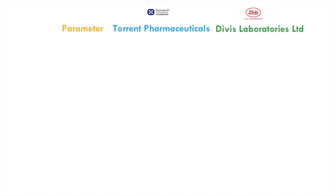The first parameter is PE. Torrent Pharma's PE is 36, whereas Divi's Laboratories' PE is 32. I've given two stars to Divi's for having the lower PE. In my previous videos I would have given two stars to the higher PE, but we have to include other parameters also before choosing a company. Not all companies with a higher PE are bad, and not all companies with a lower PE are good — we have to check all parameters before deciding.